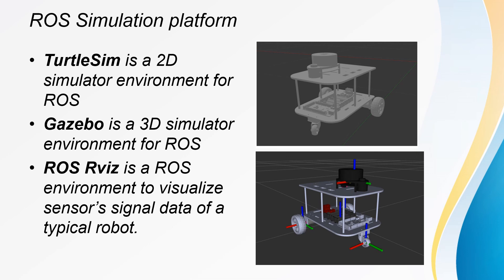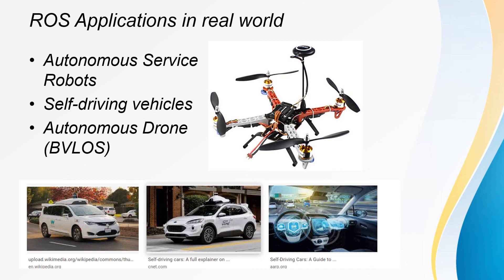ROS simulation platform — aside from tools and packages, ROS has simulator environments so you can test run your robot before bringing it into the real world. We have TurtleSim, which is for 2D, Gazebo, which was used in ROS 1, and Ignition, which is currently being implemented in ROS 2. This platform allows you to test run your robot and carry out simulations on a 3D platform. We also have RViz, which allows you to visualize your sensor signal data, and RQT, used for analysis and other computations.